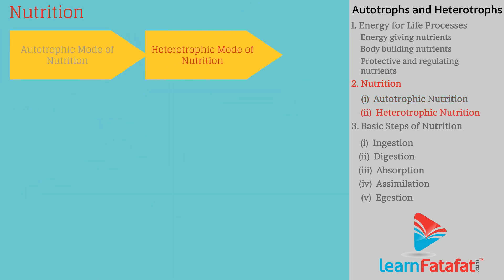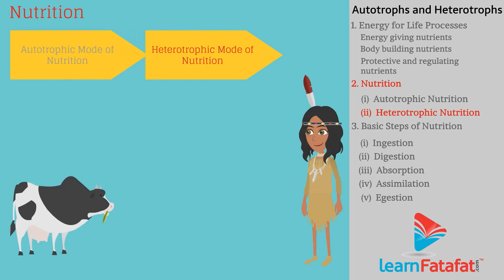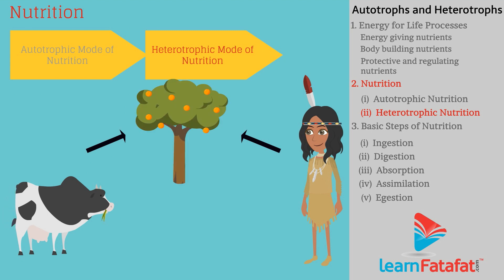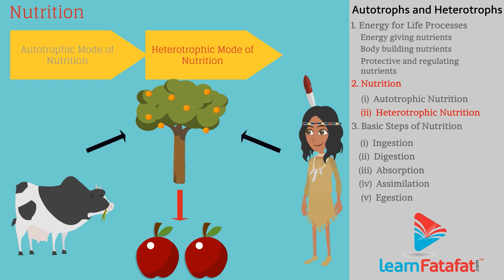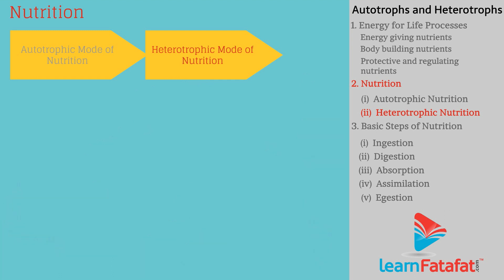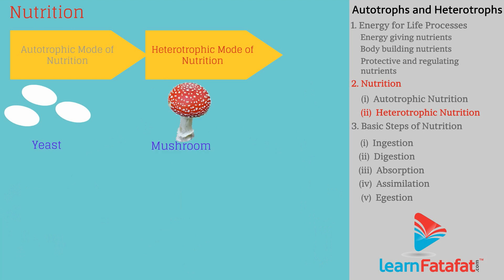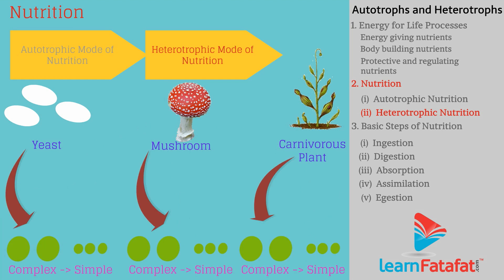Heterotrophic mode of nutrition: It is the mode of nutrition in which an organism is dependent on other organisms for obtaining food. Different organisms have different ways to obtain food. For example, fungi like yeast and mushrooms, and some carnivorous plants, break down complex food material into simple substances outside the body and then take these inside the body.